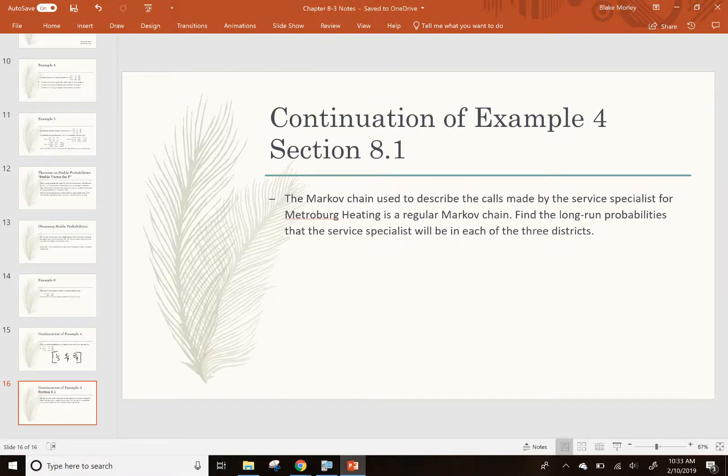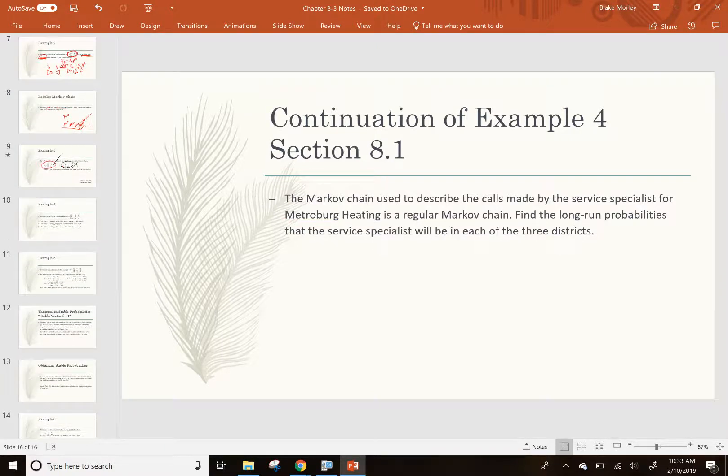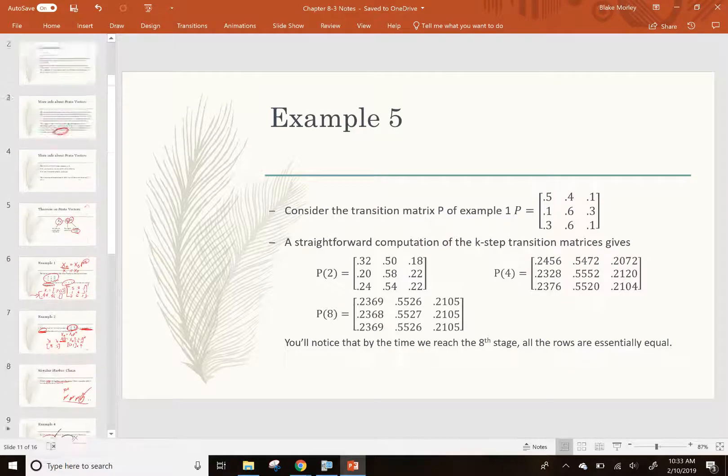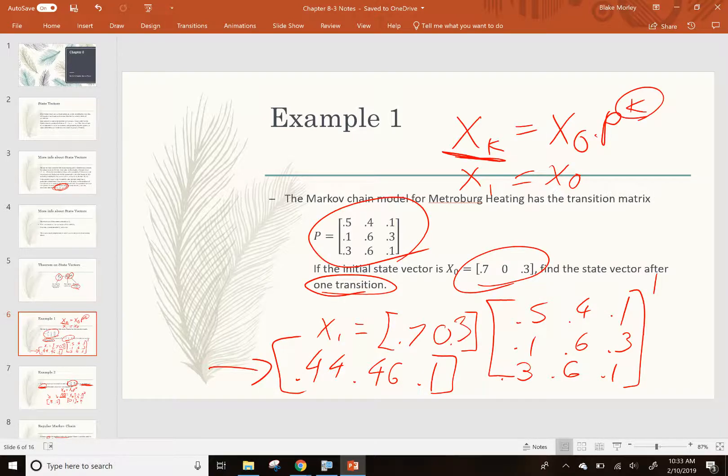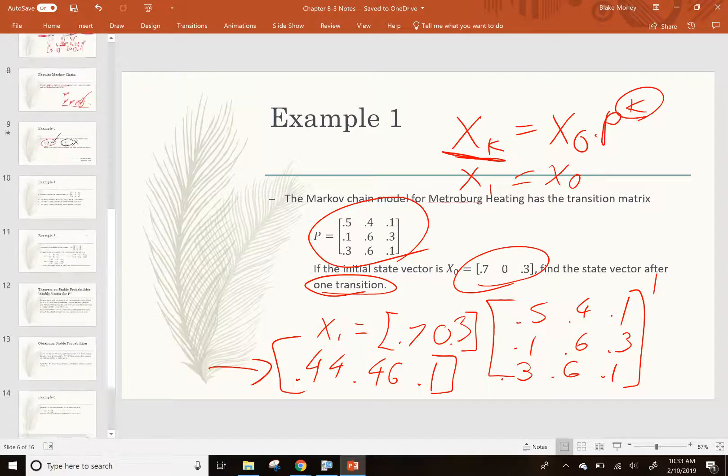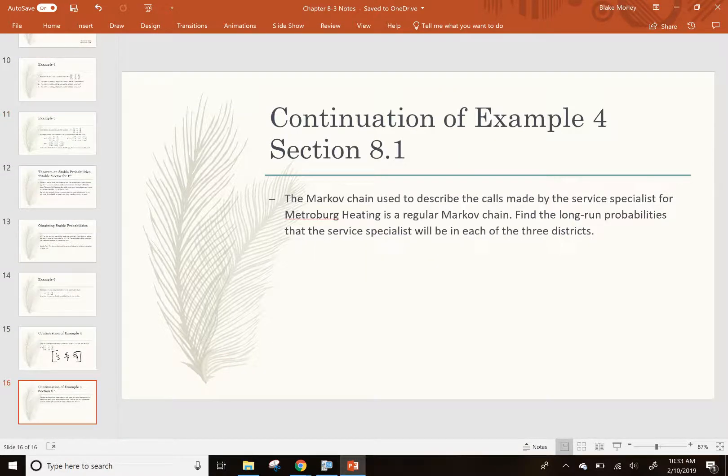And this last one talks about the heating and cooling, which was this one, I believe. Right? The 0.5, 0.4, 0.1 problem. So, I'm going to need to type that matrix in again. It's asking, find the long-run probabilities that the service specialist will be in each of the three districts.